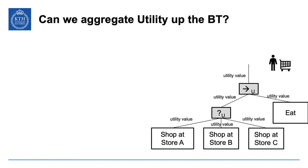One of the benefits of behavior trees is modularity and subtrees. So a reasonable question is: can we aggregate utility up the behavior tree? If we know the utilities at the leaf level, what is the utility of a subtree containing a utility sequence? What are the rules for aggregating utilities from lower levels upward?